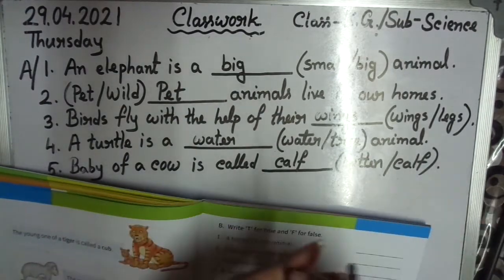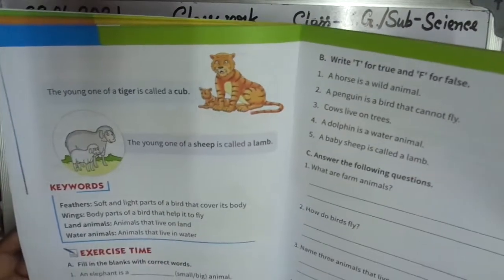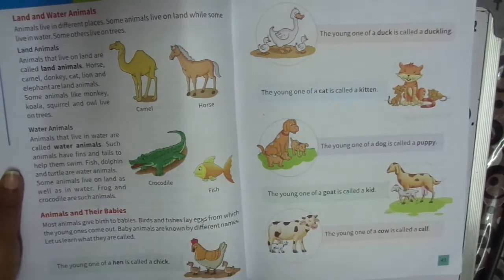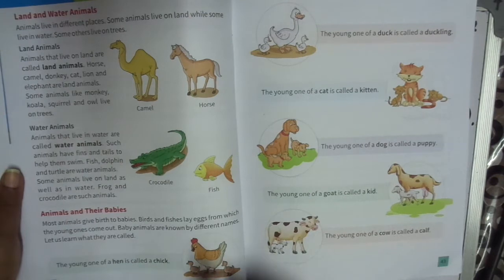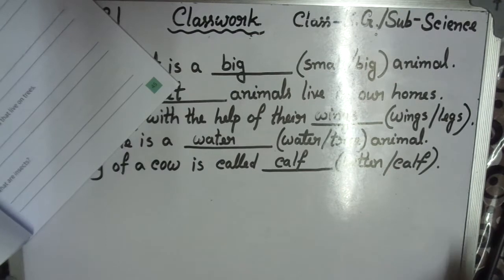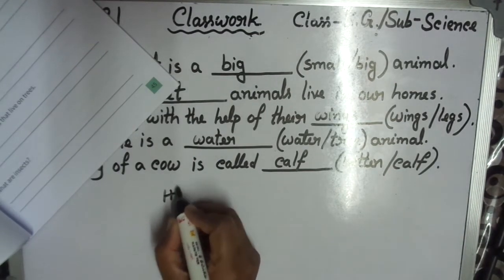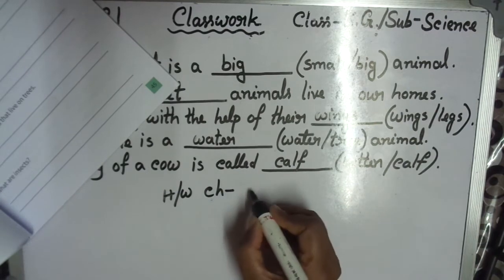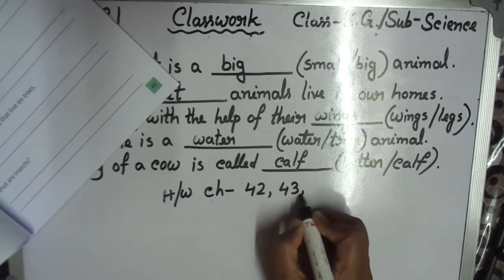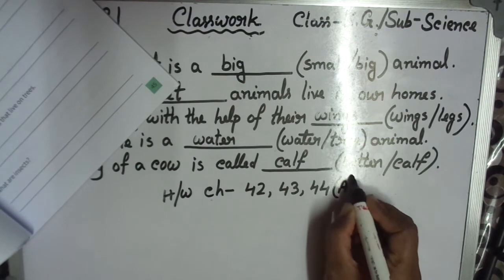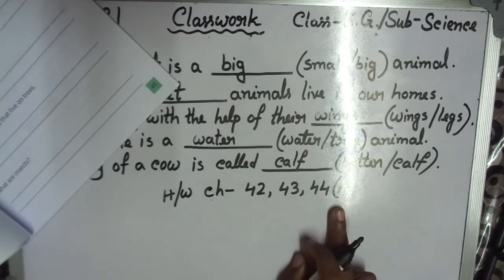I hope everyone understood the fill in the blanks. Practice pages 42, 43, and 44 — land and water animals, animals and their babies, and fill in the blanks. Take out your homework copy and practice chapter pages 42, 43, 44. Page 44 section A is especially important.